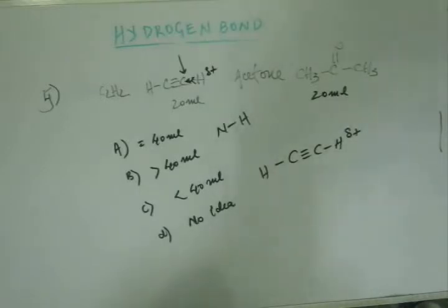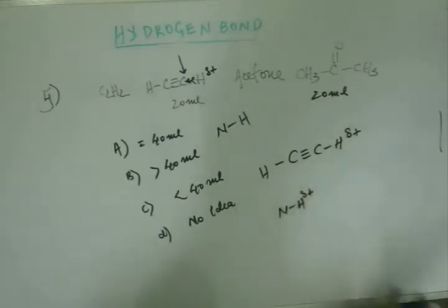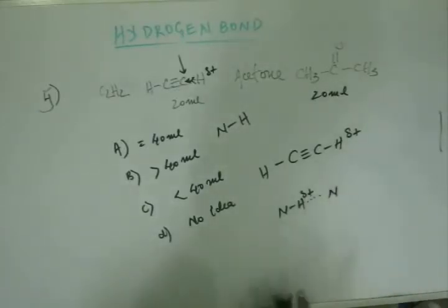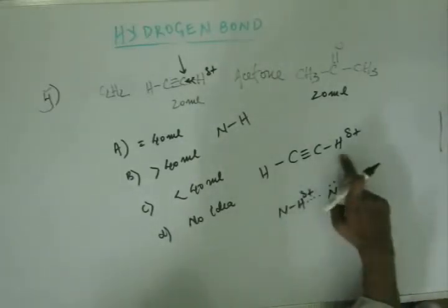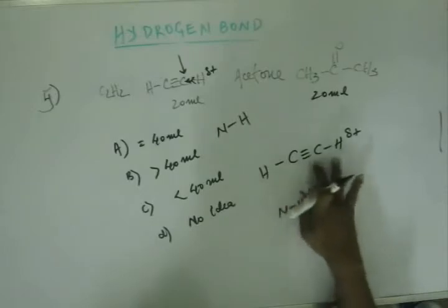In ammonia, what happens? Nitrogen pulls away the electron, making hydrogen electron deficient. Hydrogen cries for electron. And for rescue, another nitrogen atom comes. It can come because it has a lone pair, which it can give to hydrogen. Here, in case of acetylene, if hydrogen cries for electron, who is going to help? No one. Because the carbon doesn't have lone pair.